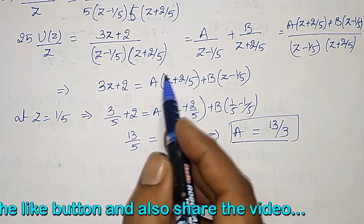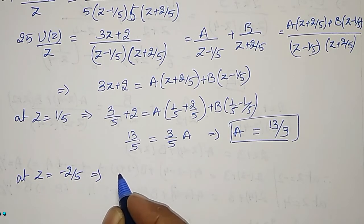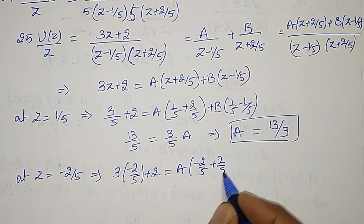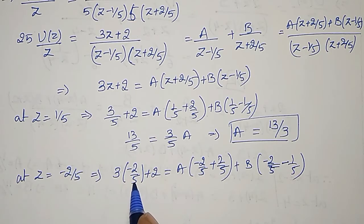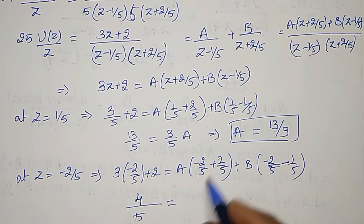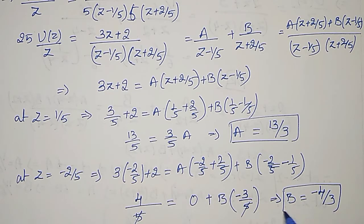To find B, let Z equal minus 2/5. Substituting: 3·(minus 2/5) + 2 equals A·(minus 2/5 + 2/5) plus B·(minus 2/5 minus 1/5). The A term becomes 0. The left side gives (minus 6 + 10)/5 equals 4/5, and B side gives B·(minus 3/5). Therefore B equals (4/5) × (5/(minus 3)) equals minus 4/3.